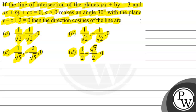तो हमारे पास given है कि एक line है — if the line of intersection of the plane AX plus BY equals C and AX plus BY plus CZ equals 0, with A greater than 0, makes a 30-degree angle with plane Y minus Z plus 2 equals 0. तो direction cosine क्या आएंगी हमारी line की? Firstly, I will tell you the key concept जो इस question को solve करने में help करेगा।